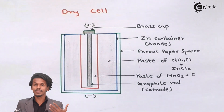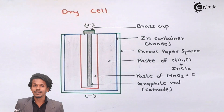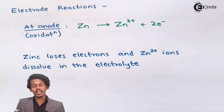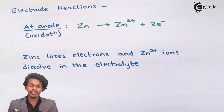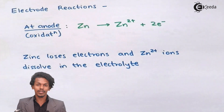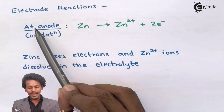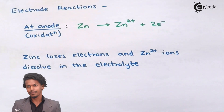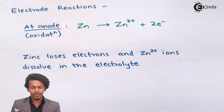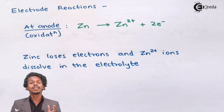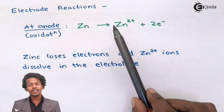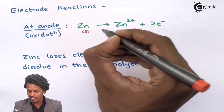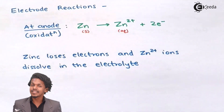Now let's look at the electrode reactions. At the anode, oxidation takes place, and since zinc is acting as the anode, it undergoes oxidation — electrons are lost. In this process, solid zinc is converted into Zn²⁺ ions plus two electrons, meaning solid zinc is converted into aqueous Zn²⁺.